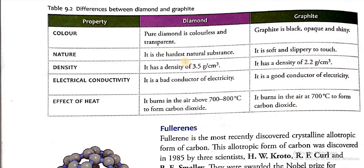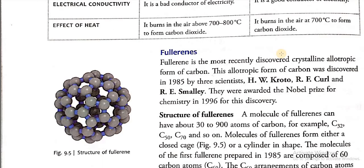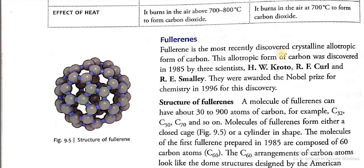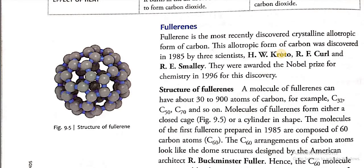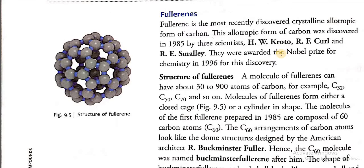These are the differences between diamond and graphite. Now the next allotropic form, crystalline allotropic form of carbon, is fullerenes. This is the most recently discovered crystalline allotropic form of carbon.